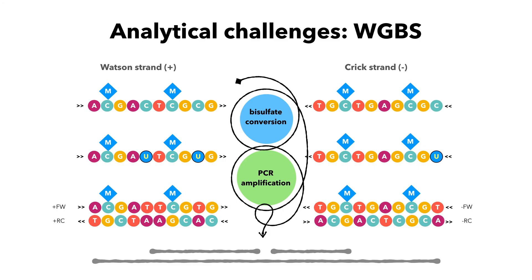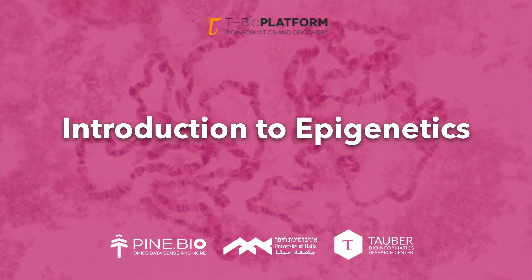Thus, a triple conversion between bases occurs, and the analytical challenge is to accurately map reads to their original location, differentiating between conversions that happened as a result of bisulfite conversion of unmethylated cytosines and thymines that were a part of the original sequence. Since both strands of the DNA are sequenced, their complementarity can be leveraged to address this challenge. Comparing quality of mapping to the reference genome with potential changes of cytosines to uracil makes the analysis of such data computationally intensive and time-consuming. In our next lecture, we will discuss non-coding RNAs and their role in gene expression regulation and epigenetics.